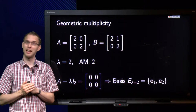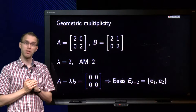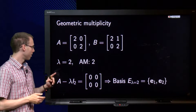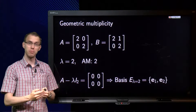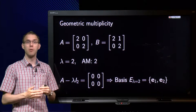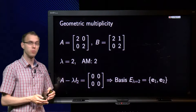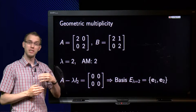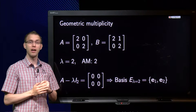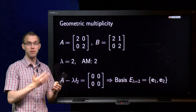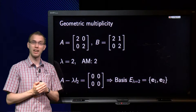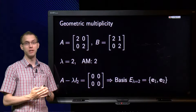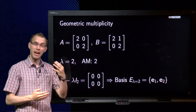Let us look at matrices A and B. They both have eigenvalue 2 with algebraic multiplicity 2. First we look at A: we compute A minus 2 times the identity matrix and we get the zero matrix. The basis for the null space of the zero matrix is any basis in R2, so we can take the standard basis consisting of E1 and E2. We then have two independent eigenvectors, which means we can form a matrix P such that A equals P times D times P inverse. The bottleneck is the number of independent eigenvectors — P must be invertible, so we need enough independent eigenvectors.